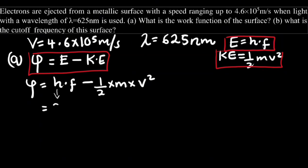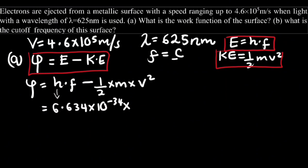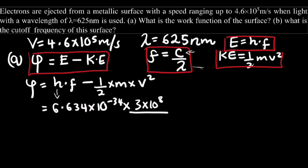So we substitute the values. Planck's constant is always 6.634 times 10 to the power negative 34, multiplied by the frequency. Since we have the wavelength in the question, frequency equals the speed of light divided by the wavelength. So we multiply by the speed of light, which is 3 times 10 to the power 8, divided by the wavelength, which is 625 times 10 to the power negative 9.